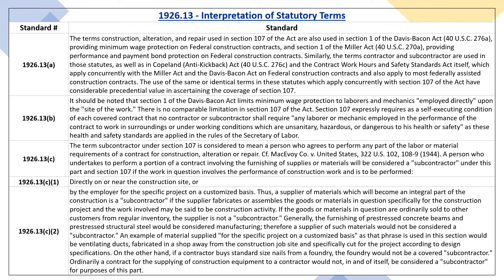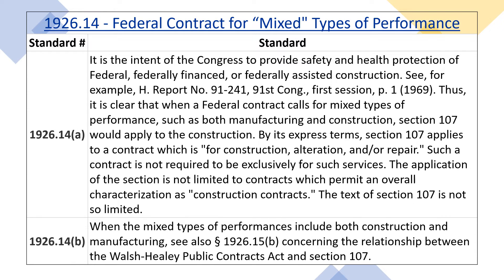Generally, the furnishing of pre-stressed concrete beams and pre-stressed structural steel would be considered manufacturing; therefore, a supplier of such materials would not be considered a subcontractor. An example of materials supplied for the specific project on a customized basis would be ventilating ducts fabricated in a shop away from the construction job site and specifically cut for the project according to design specifications. On the other hand, if a contractor buys standard size nails from a foundry, the foundry would not be a covered subcontractor. Ordinarily, a contract for the supplying of construction equipment to a contractor would not in and of itself be considered a subcontract for purposes of this part.